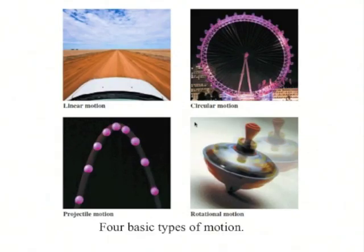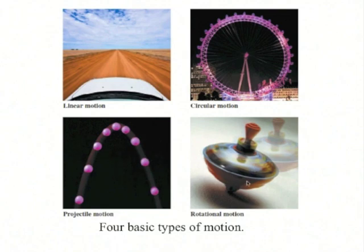Here are four basic types of motion described in the textbook: linear motion, which goes along some straight line; circular motion; projectile motion, where an object is flying through the air affected only by gravity; and rotational motion, where an object might spin around an axis.